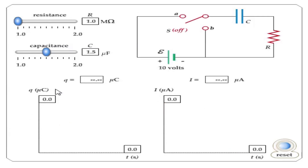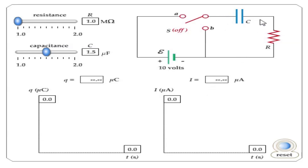Now let's look at the charge in the capacitor versus time graph and the current through the capacitor versus time graph during the discharging process. When we say discharging, this means the charges are already stored in the capacitor. Let's flick the switch to B and discharge the capacitor.